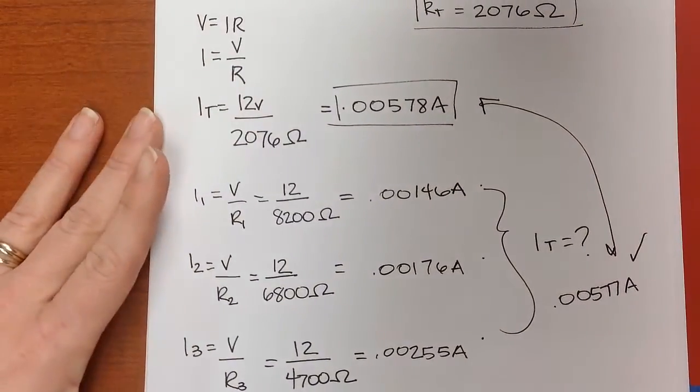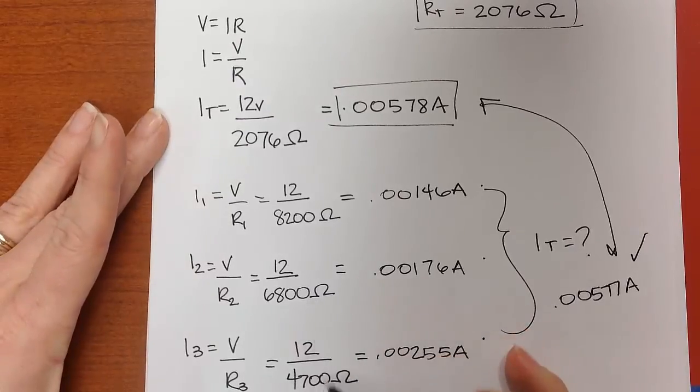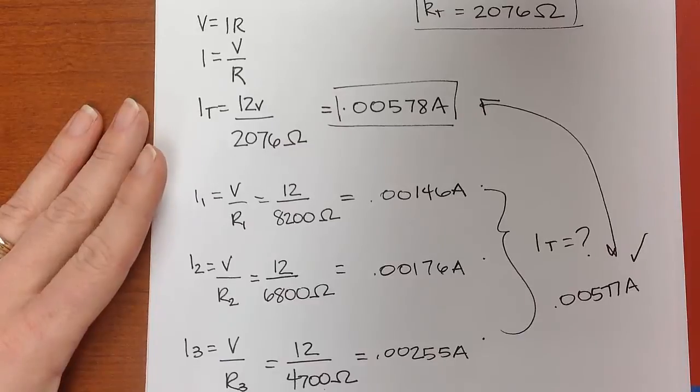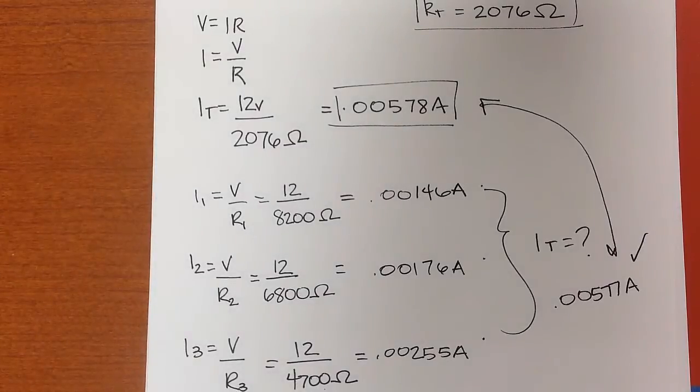Also, when I look at these, the branch that had the lowest resistance has the greatest current. So it looks like I probably got it right. Thanks so much. Have a great one.